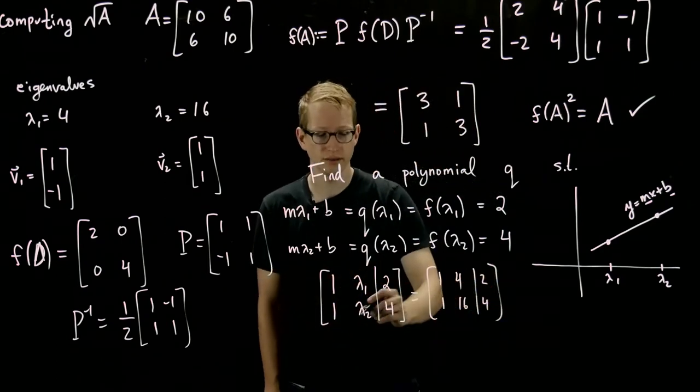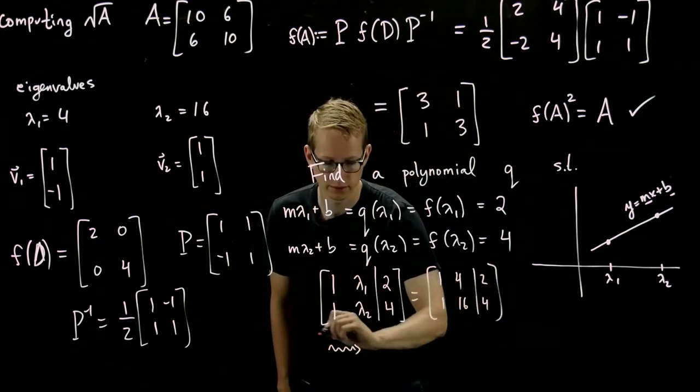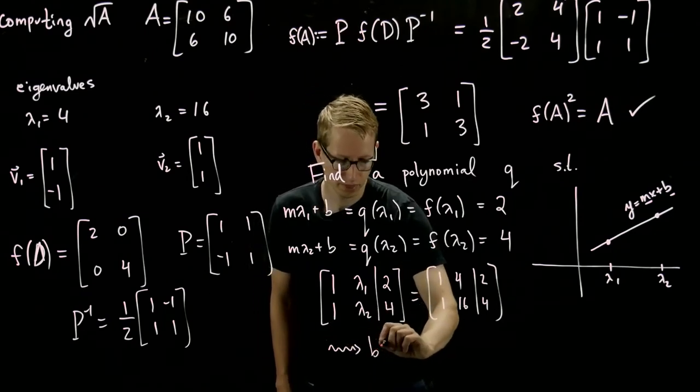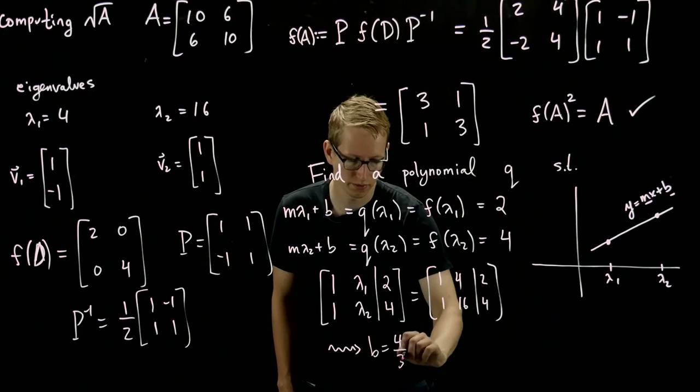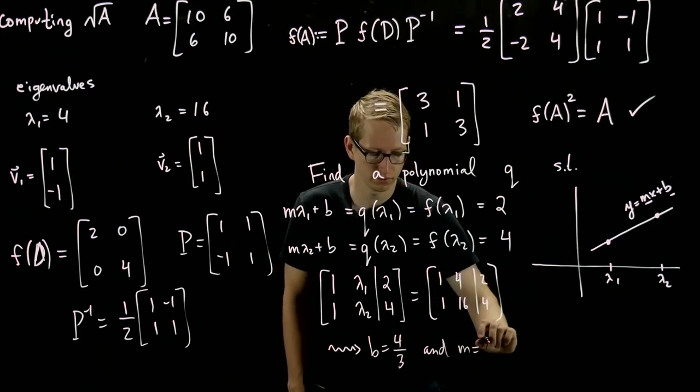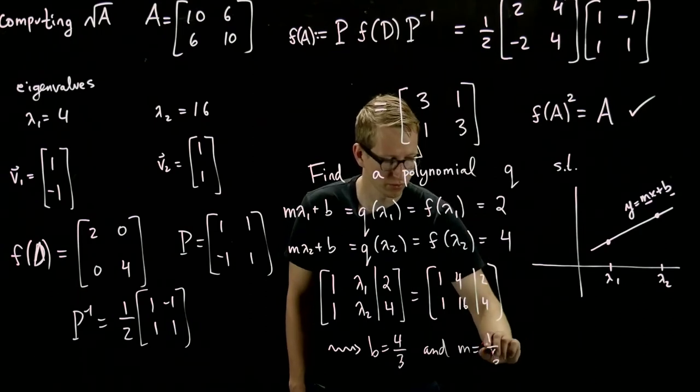And if we try to row reduce this system and solve it, what we end up getting is b equals 4 thirds, and m equals 1 sixth.